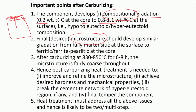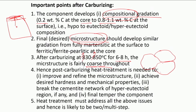After carburizing - at above 930-950°C for larger components for about 6 to 8 hours - what you develop throughout is a very coarse microstructure. The typical crystallite size would be fairly coarse. This is good for converting into martensite, but not so good for introducing or retaining toughness in the core.